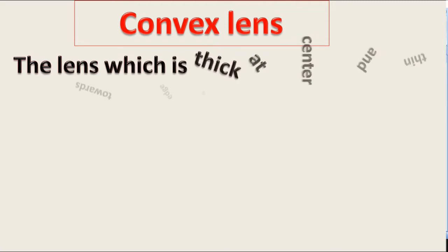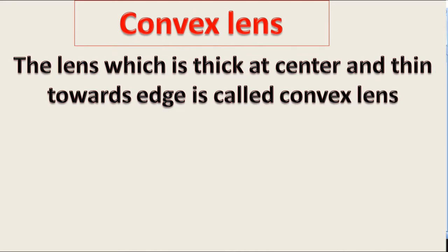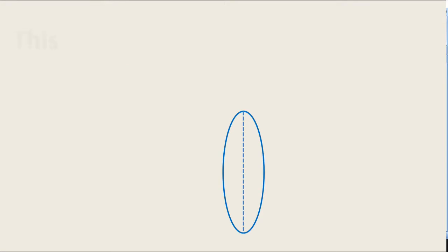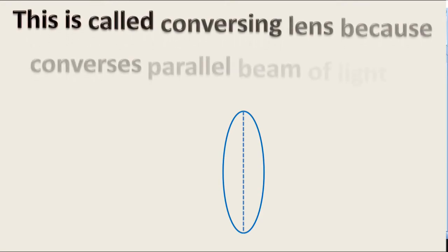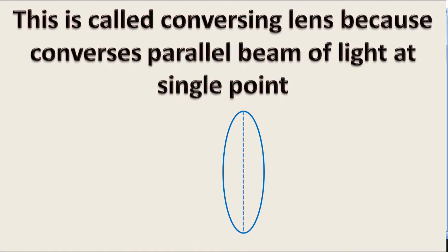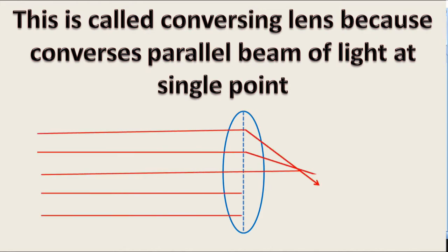Convex lens. The lens which is thick at center and thin towards edge is called convex lens. This is called converging lens because it converges a parallel beam of light at a single point. The converging can be shown as a ray diagram as it converges parallel beam of light at single point.